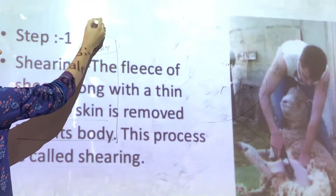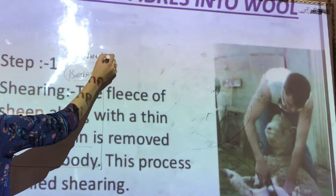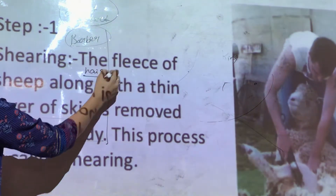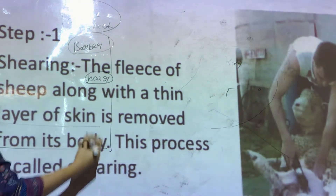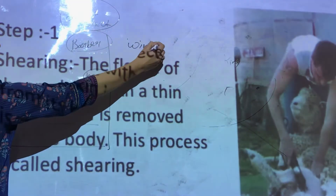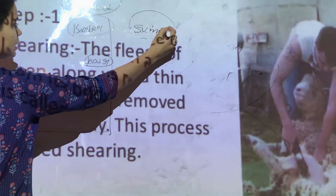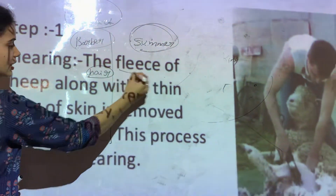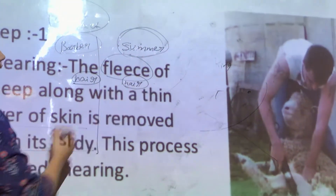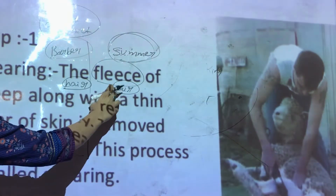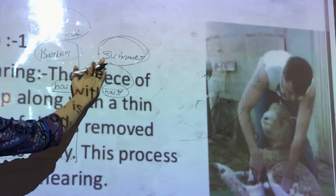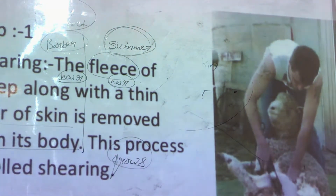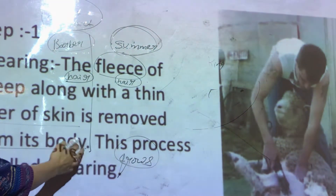This process does not harm the sheep, just as it doesn't harm you when you go for a haircut. The sheep are also not harmed in this process. Their hair is generally removed in summer season, since they don't need the warm layer of hair in summer. The fleece grows back again the same way as your hair grows after a haircut.